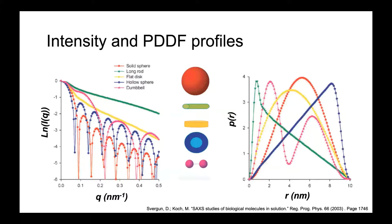Looking at different intensities and pair distance distribution functions for various particle shapes: a solid sphere in red, a long rod in green, a flat disk in yellow, a hollow sphere in blue, and a dumbbell-shaped particle in purple. You can already determine they'll have very different particle shapes from their scattering curves, but the pair distance distribution function provides the quantitative edge — determining particle size as well as the size of different features within that particle. This is very useful for catalysis, nanoparticle suspensions, or quantum dots.